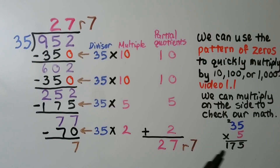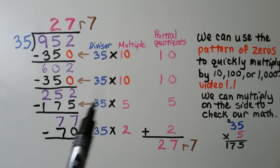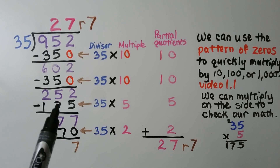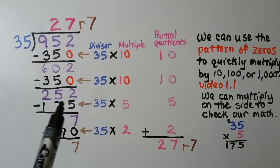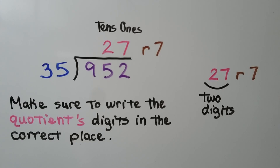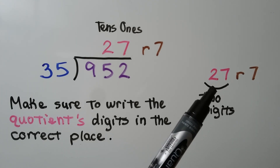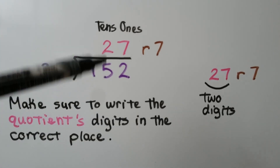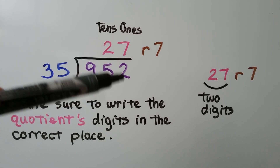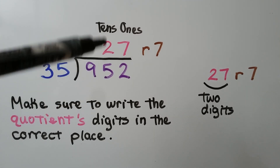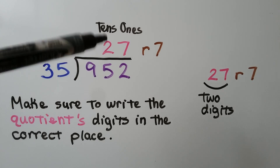We write the quotient in the correct place above the dividend, lining up ones and tens. We can multiply on the side to check our math — when we got to 35 times 5, we can multiply on the side to get the correct product. We need to make sure to write the 7 in the ones place above the 2 in the ones place, and the 2 in the tens place above the 5 in the tens place.